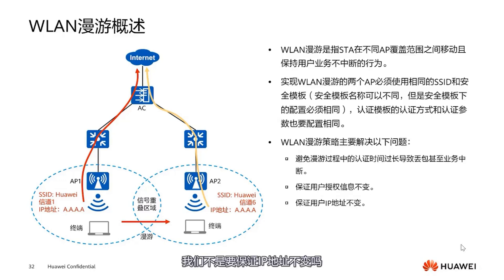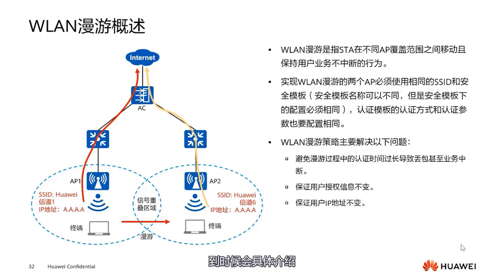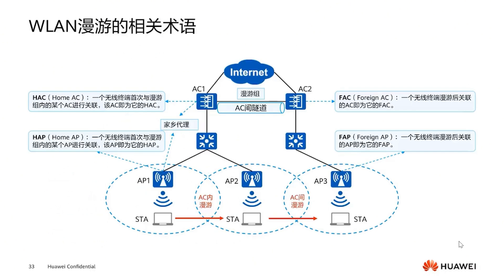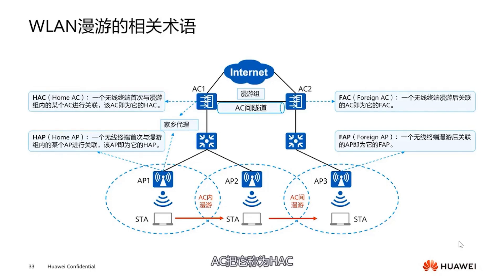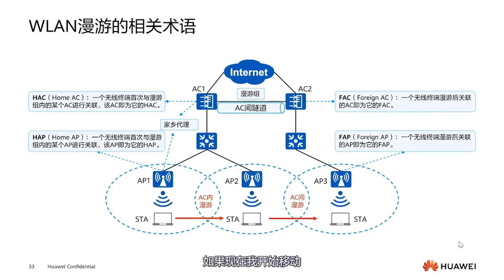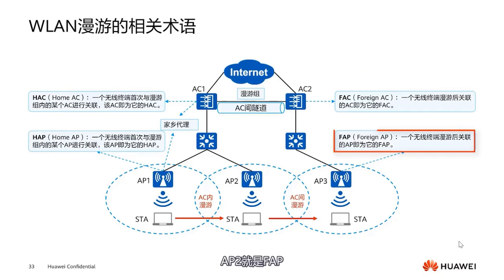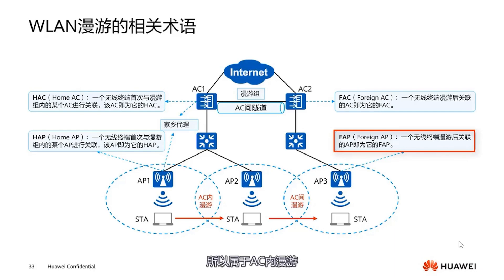There's also another issue: aren't we supposed to ensure the IP address remains the same? What if these two areas are in different network segments? We will discuss Layer 3 roaming later with specific details. Let's first look at some terminology. The first concept is HAC — home AC. When we enter the network at the first association, the AC is referred to as HAC, and the first associated AP is called the home AP, or HAP. When the terminal moves to another place, AP2 is then the FAP, known as foreign AP. AP1 and AP2 are both managed within AC1, so this is considered intra-AC roaming.